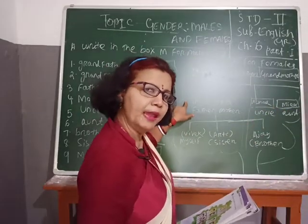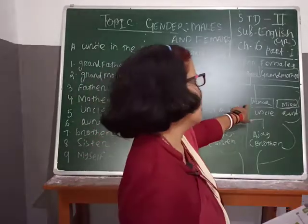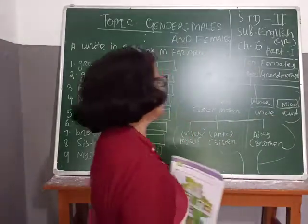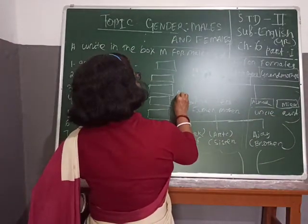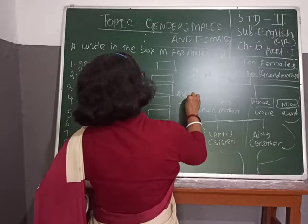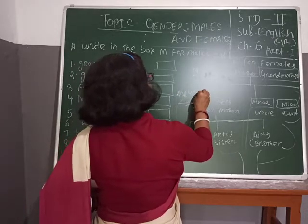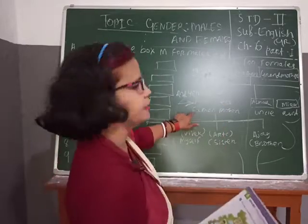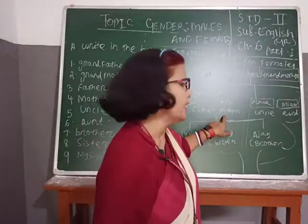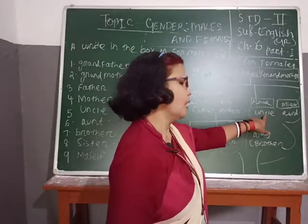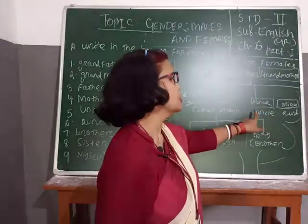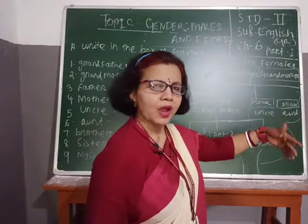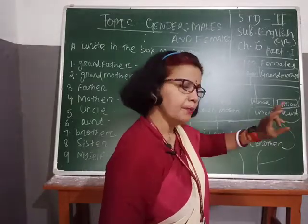Arun is male, Rekha is female. Asok is male, Meera is female. They belong to the second generation. Father is male, mother is female. Uncle — father's brother — is male. His wife is your auntie, female.